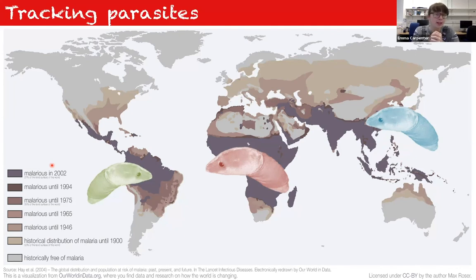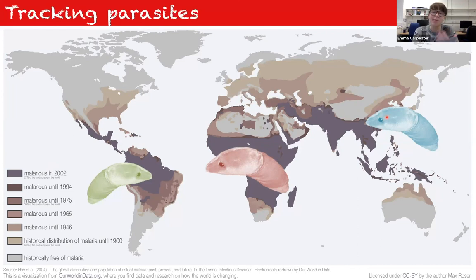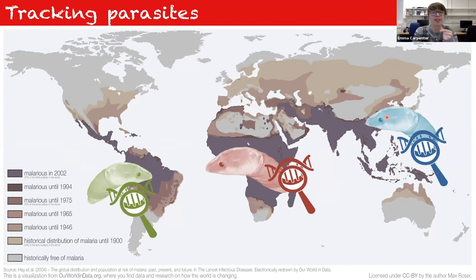Modern malaria medicine typically includes artemisinin combined with another drug. However, elimination is not complete because parasites have genetic variation — different genomes with slightly different DNA alterations. A parasite can acquire a mutation making it resistant to artemisinin. By sequencing parasite DNA, scientists can detect where this resistance mutation exists and monitor whether it has spread to other countries, allowing targeted use of different drugs or malaria eradication efforts.